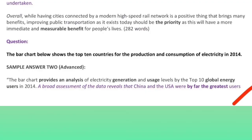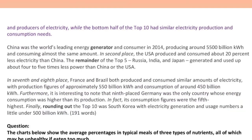The bar chart below shows the top 10 countries for the production and consumption of electricity in 2014. The bar chart provides an analysis of electricity generation and usage levels by the top 10 global energy users in 2014. A broad assessment of the data reveals that China and the USA were by far the greatest users and producers of electricity, while the bottom half of the top 10 had similar electricity production and consumption needs. China was the world's leading energy generator and consumer in 2014, producing around 5,500 billion kilowatt-hours.